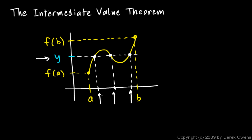The intermediate value theorem says there will be a value between a and b — some number c could be here, or here, or somewhere else depending on the function. The theorem says there will be some number between a and b such that f(c) equals y, but there could be more than one. That still satisfies the requirement of there being one. The intermediate value theorem simply says there will be one or more.